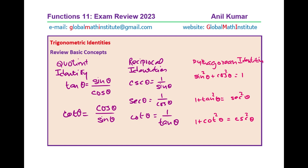These are very basic identities which you should remember. When you look at these, you should think about it like this: sin squared theta should be equal to 1 minus cos squared theta. The difference of squares can be written as (1 plus cos theta)(1 minus cos theta). Many times these simplifications also help us to prove the identities very easily.